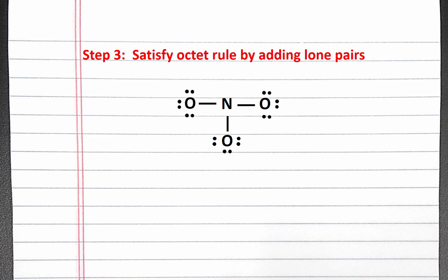Since we've run out of electrons and not all atoms are satisfied, we need to create multiple bonds. Nitrogen wants two more electrons, so we can use one lone pair of electrons to create a double bond. Now all atoms are satisfied.